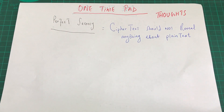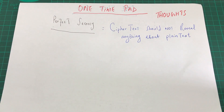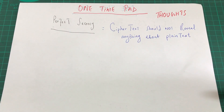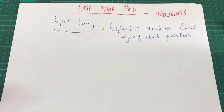Last time we looked at one-time pad, and I want to share some more information about it — vulnerabilities and properties. I'm going to start with something called perfect secrecy. According to Shannon, perfect secrecy means that a cipher text should not reveal anything about the plain text. When I look at an encrypted form of plain text, I should not get any clue what this cipher text maps to.